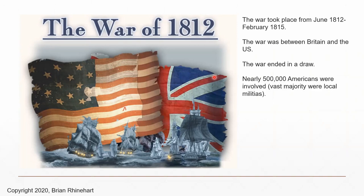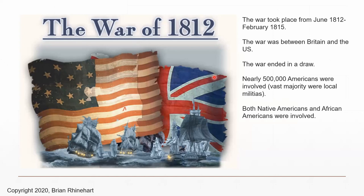There were about half a million Americans involved in this war. The vast majority were local militiamen called up from individual states. Native Americans and African Americans were also involved — a lot of them ended up siding with the British, as many weren't happy with what was going on in America at the time, though there were still many who fought for the American side. Reports vary, but approximately 15,000 Americans were killed.